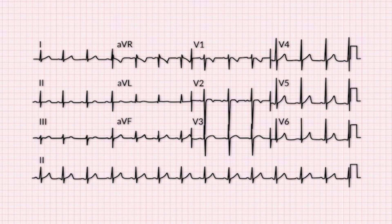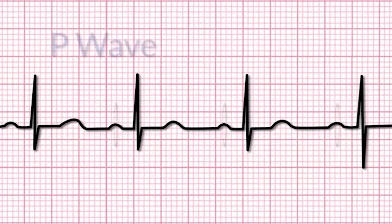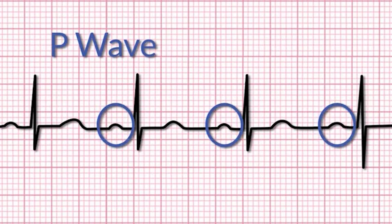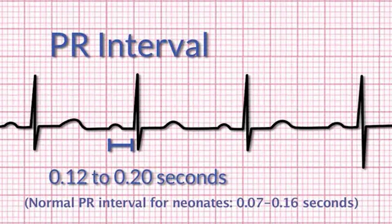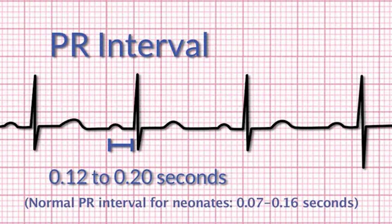The P wave represents atrial conduction and contraction. It is best viewed in Lead 2, where it is small and upright. The PR interval represents the time from atrial contraction and conduction to the onset of ventricular conduction. It is measured from the beginning of the P wave to the beginning of the QRS complex. The normal PR interval is 0.12 to 0.20 seconds.